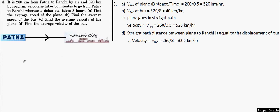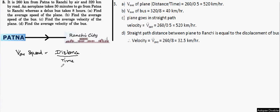Let's start. For finding average speed, keep in mind that average speed is distance divided by time. And if you're talking about velocity, instead of distance it will be displacement. So let's note down the key values.